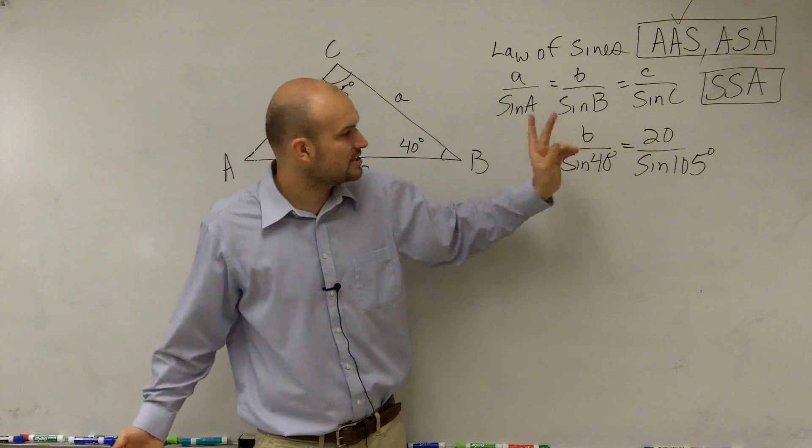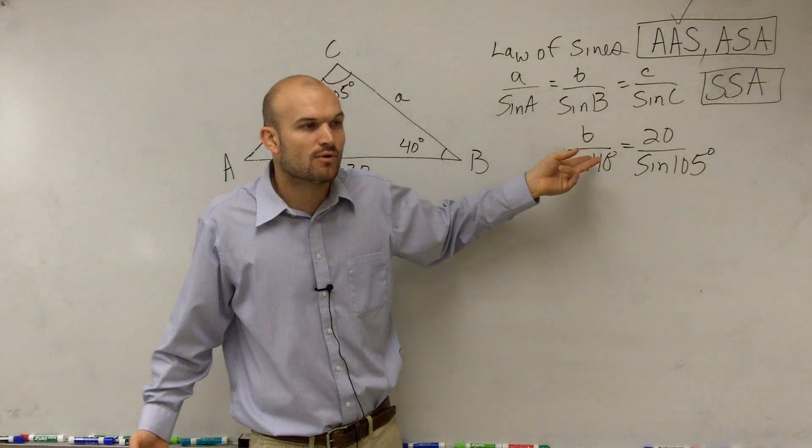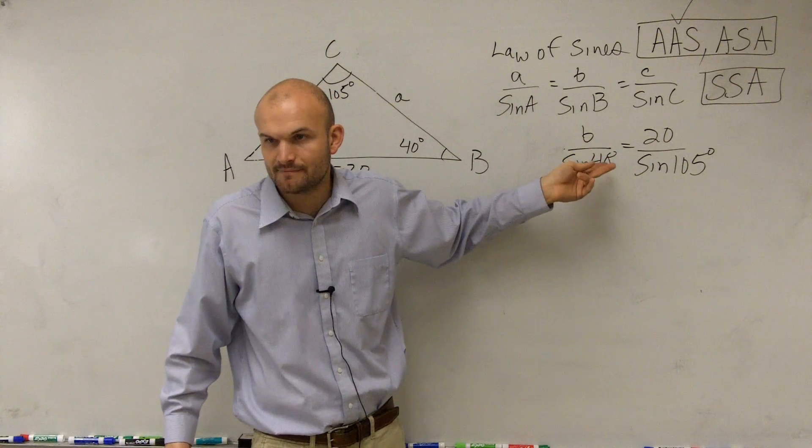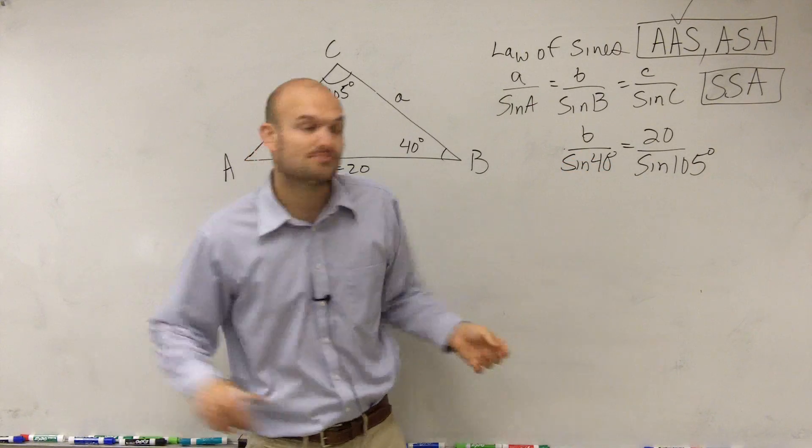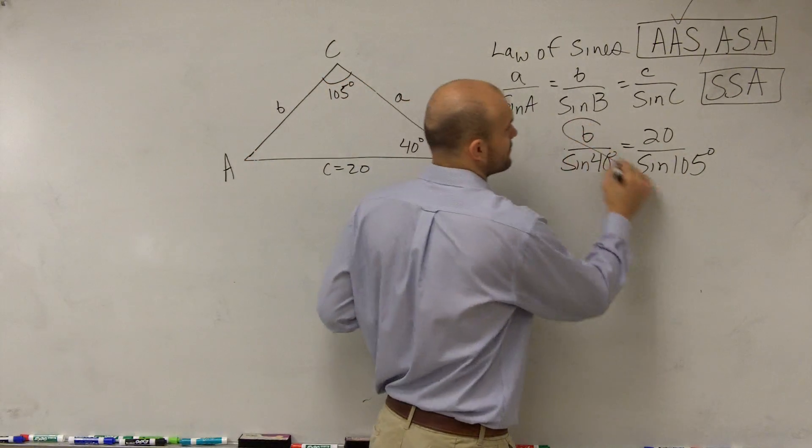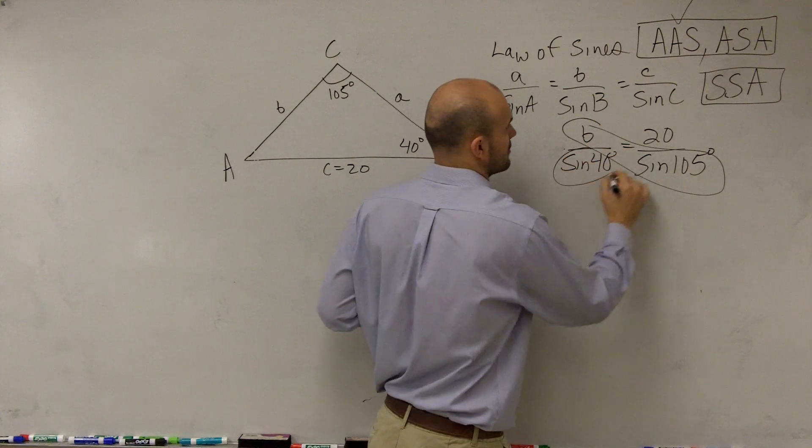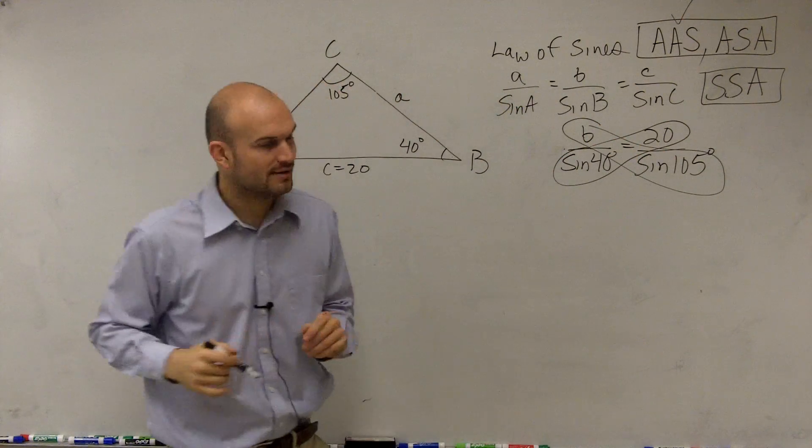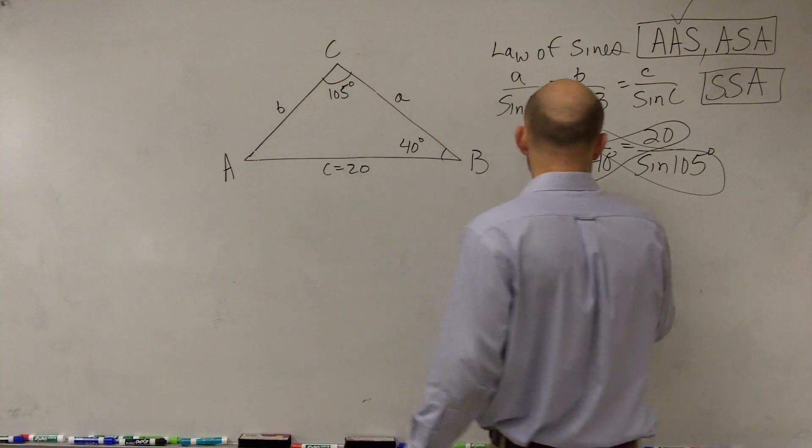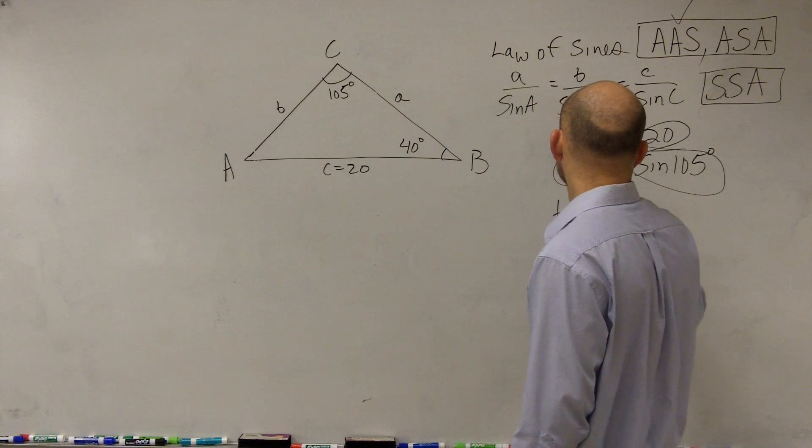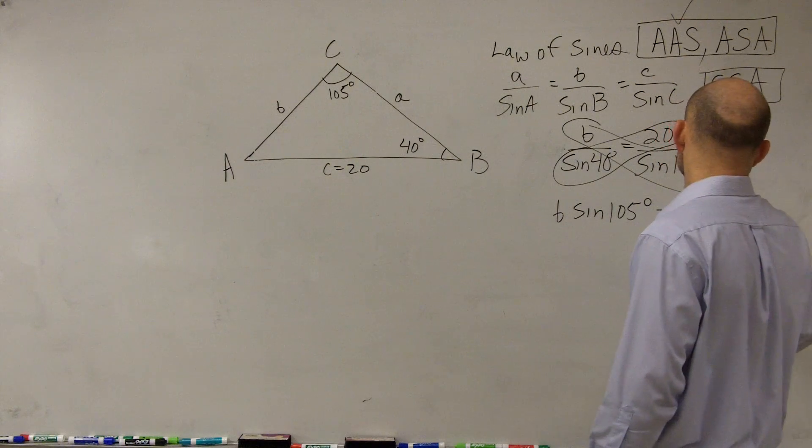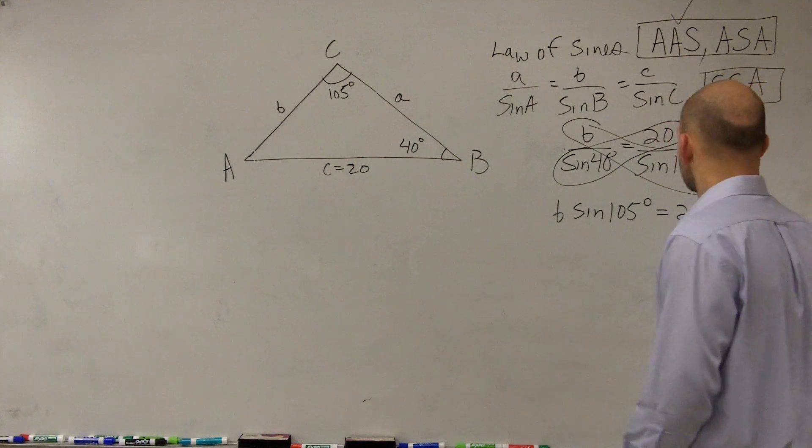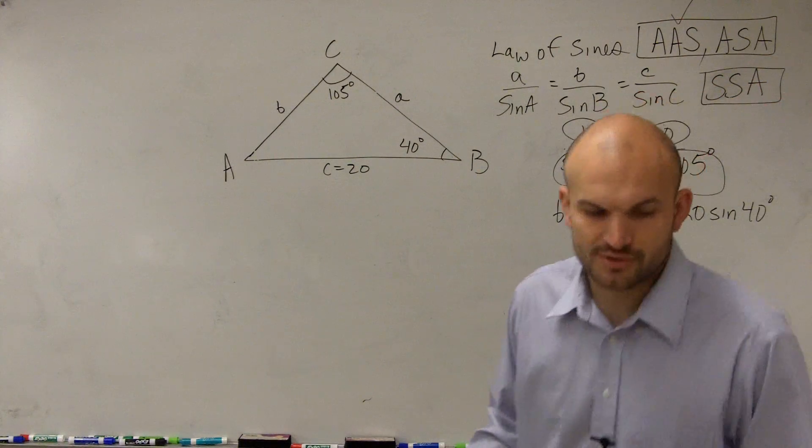So now I have a proportion, and I only have one missing value, which is the length of b. So do you guys remember how to solve proportions? Yeah, you can cross multiply with your proportions. Didn't really like teaching it that way in Algebra 1, but you guys are kind of old enough, hopefully, to understand inverse operations, and you can probably get to that.